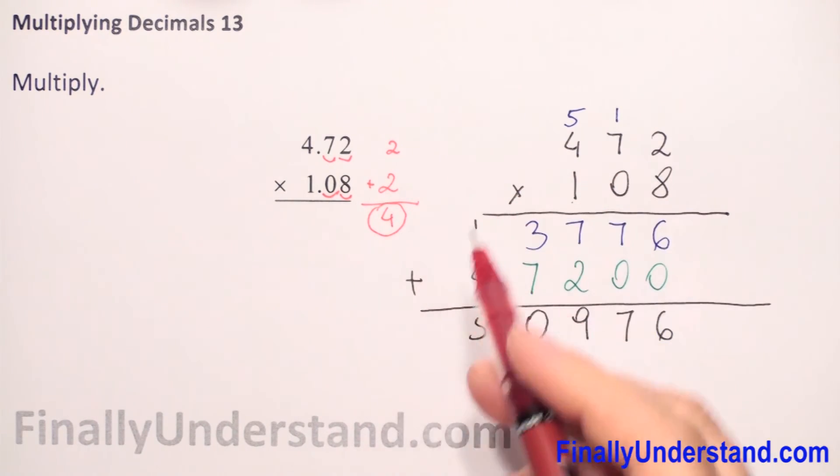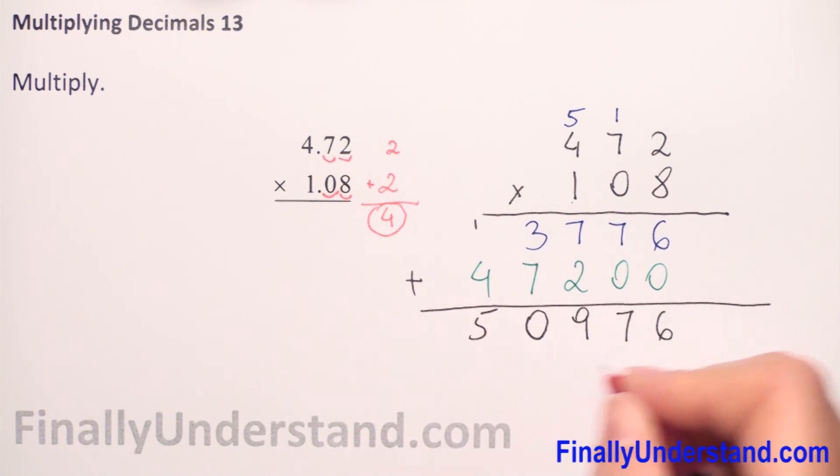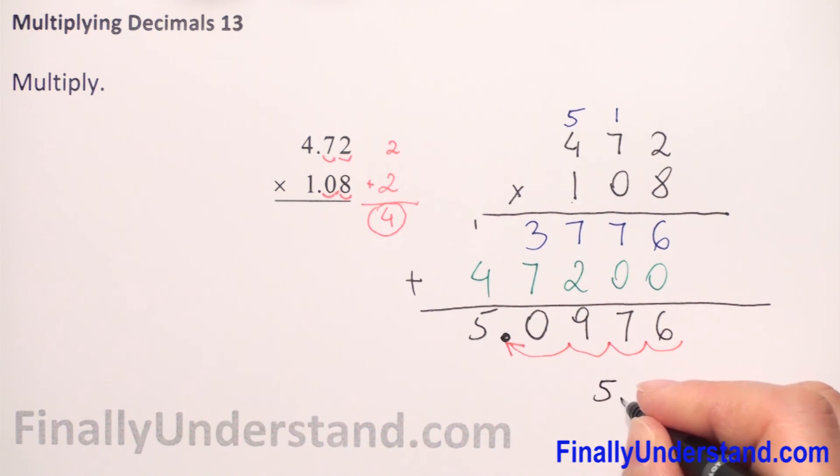So in our solution we need 4 decimal numbers. We start to count from the right side and we are going to the left. 1, 2, 3, 4. So our decimal point will be between 5 and 0. So our solution is 5 decimal point 0, 9, 7, 6.